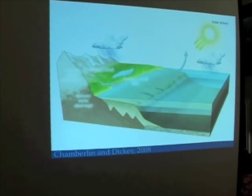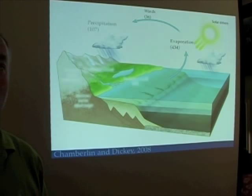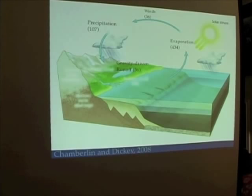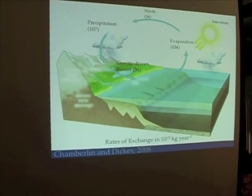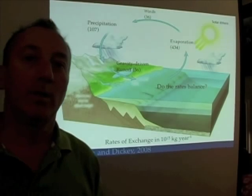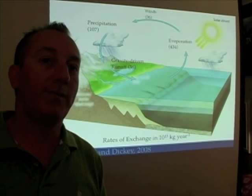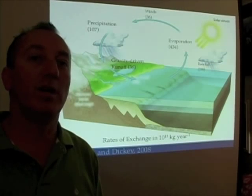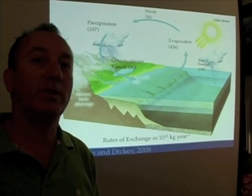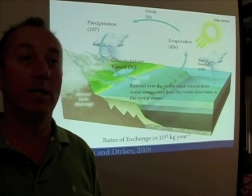If we look at an example of rate processes and the relative rates at which water moves about, the numbers in your book tell you that most of the water on our planet is evaporated over the oceans. Most of the water that rains on us, or most of the water that falls on the continents, originated in the oceans.